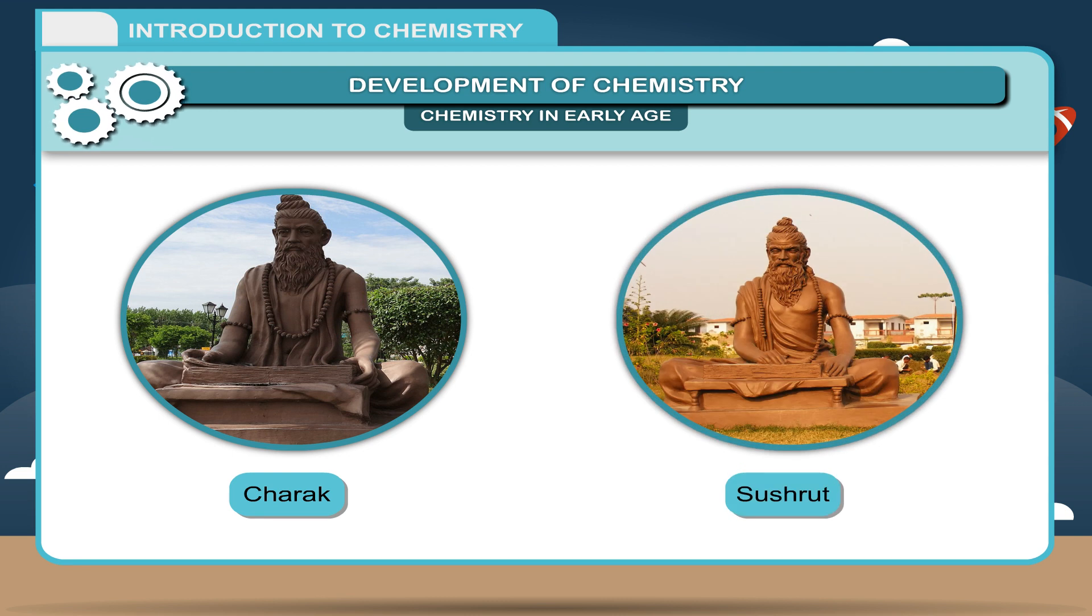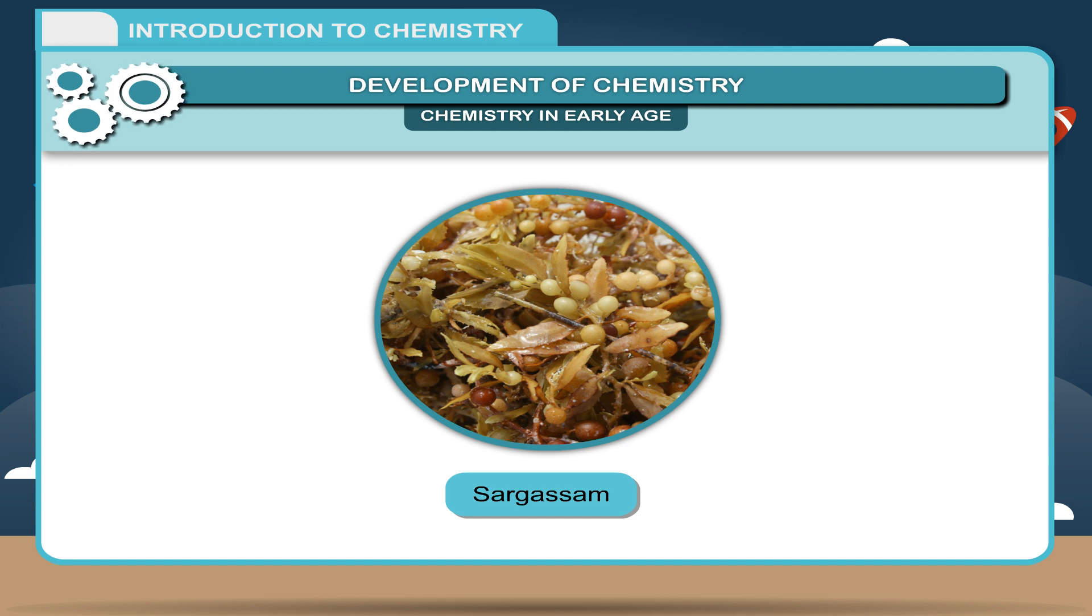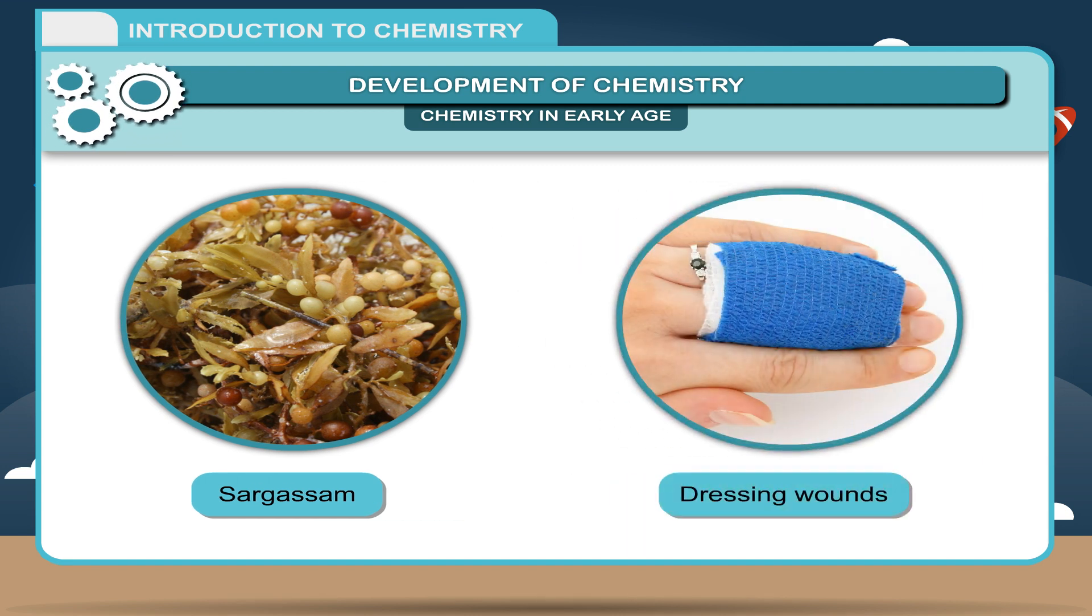Charak and Sushrut, founders of medicine in our country, knew a lot about using plant extracts for curing people. Sargassum, a plant extract, was used for dressing wounds.